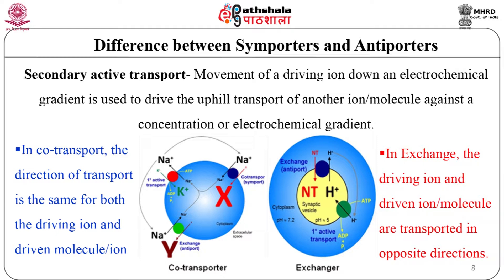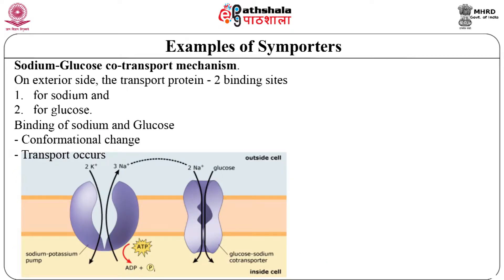In the figure, if X and Y represent transporter substrates and P is inorganic phosphate: symport or co-transport means that a molecule is allowed to be transported from high to low concentration while moving another molecule with it from low to high concentration — like pulling another molecule with the driving ion into the cell. An example is the sodium-glucose co-transporter. In this case, the transporter protein has two binding sites on its exterior side — one for sodium and one for glucose. When both bind to the protein, there is a conformational change which allows transport. The electrochemical gradient provides the energy needed to transport both molecules into the cell.